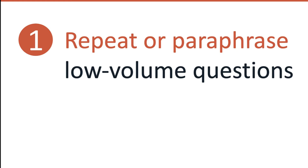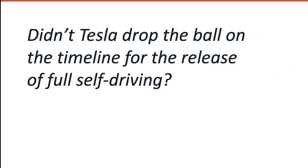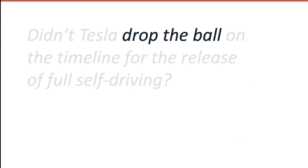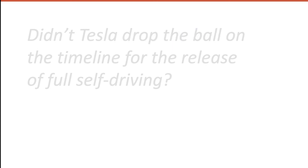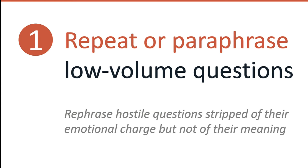We want to repeat or paraphrase those questions. When we do that, there's a chance we might occasionally get hostile questions — something like, 'Why did Tesla drop the ball on the timeline for the release of full self-driving?' 'Drop the ball' has a negative connotation and a negative emotional charge. So what we want to do in those situations is strip the question of all negative emotion and rephrase it in a more neutral way when we repeat it for the audience. We might say, 'Why did the timeline for the release of full self-driving suffer some setbacks?' We strip it of that negative charge, and this is a way we can take control of the flow of information and how we answer the question.